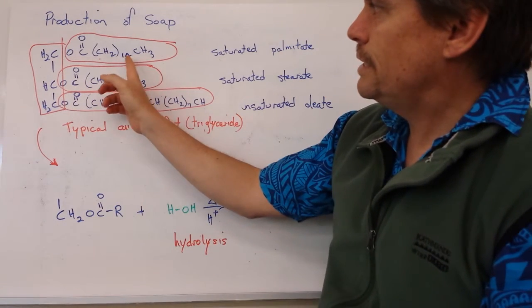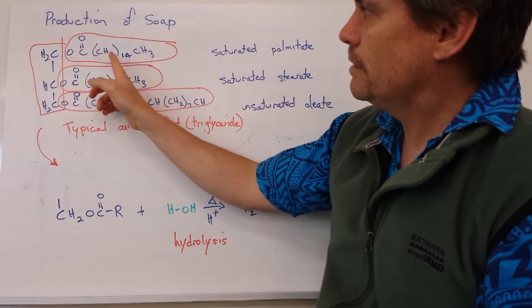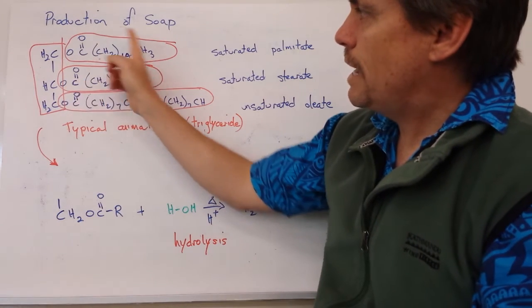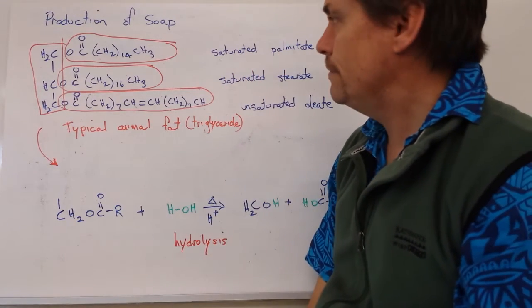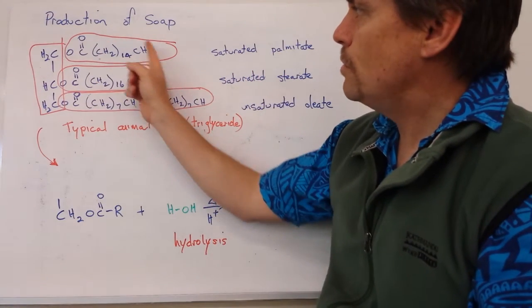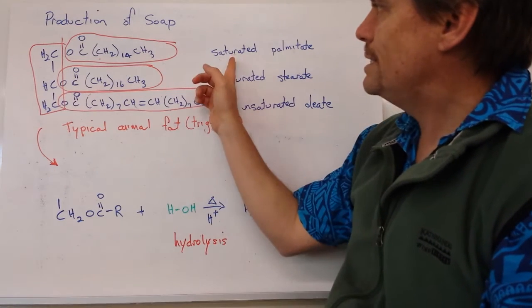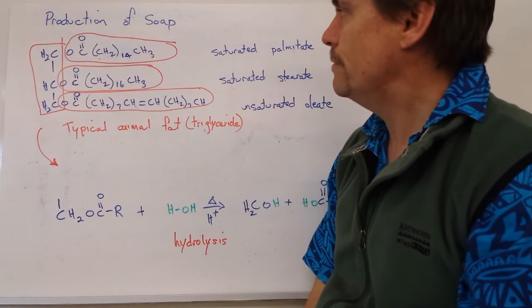In the first example, we've got 1 plus 14, 15 carbons in total. So this is what we call a palmitate derivative. And because there are no double bonds between the carbons in there, we say that it's a saturated palmitate derivative.